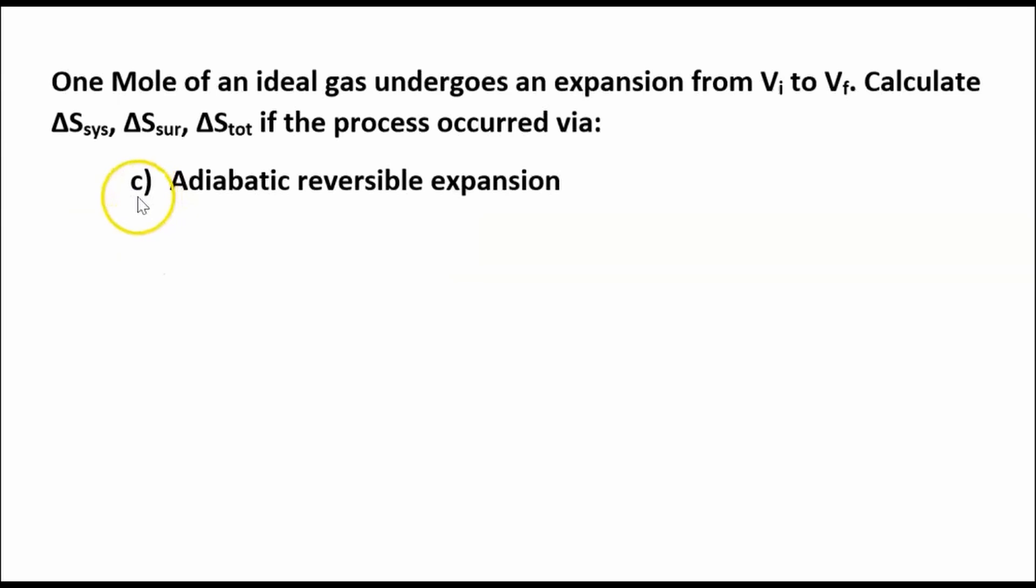This is part C. If you've seen my previous two videos, there's a part A, which is isothermal reversible expansion. Part B is an irreversible expansion against zero pressure, and here we have adiabatic reversible expansion.